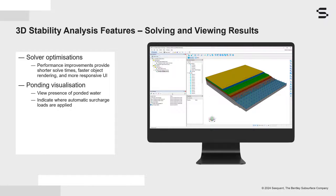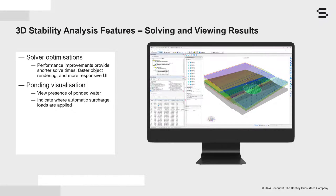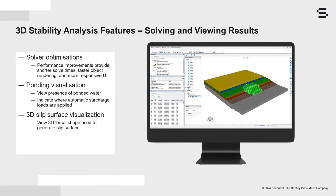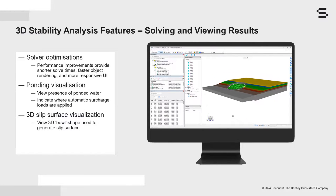Ponding visualization has now been implemented in 3D GeoStudio analyses, ensuring consistency between 2D and 3D. In the case of Slope3D, automatic surcharge loads are applied under the ponded condition. The three-dimensional bowl used to generate a slip surface can now be visualized in results view, creating better insight into the behavior of the software and helping to provide greater clarity for results interpretation.